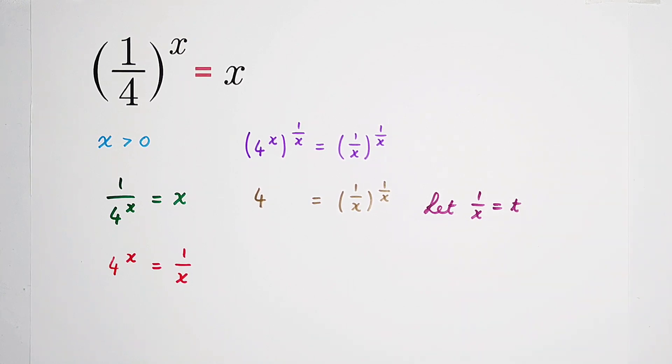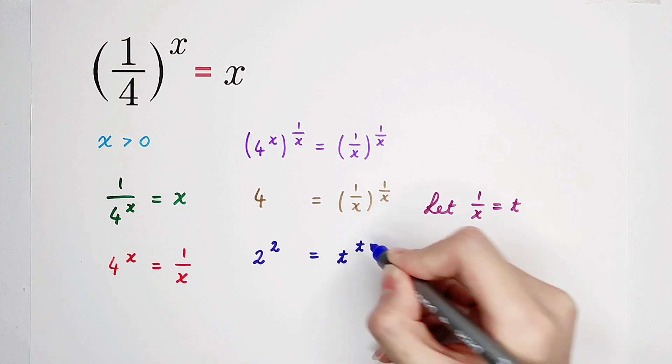And the next step, four can be written as two squared, two to the power of two. The right-hand side, t to the power of t.